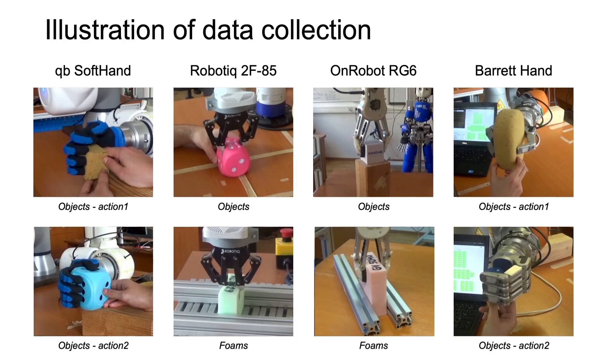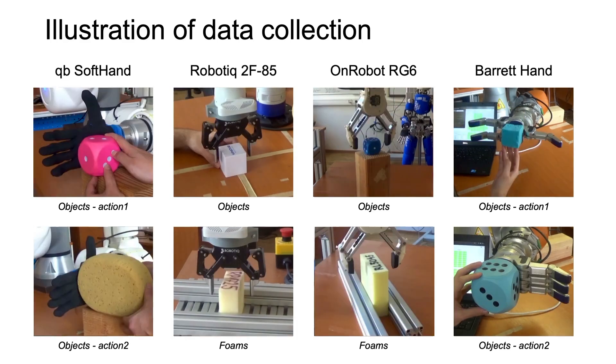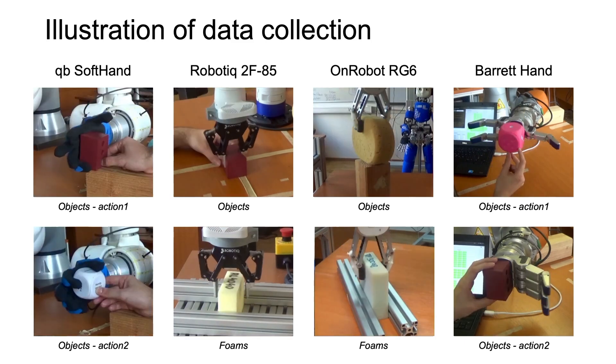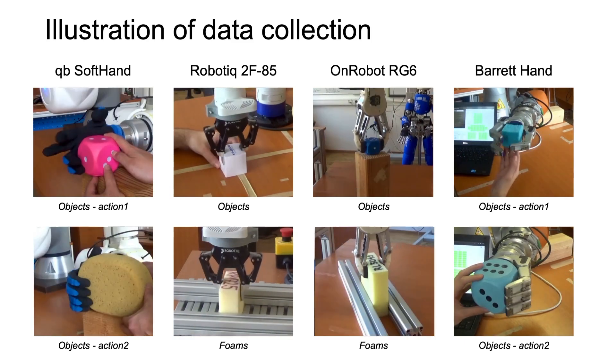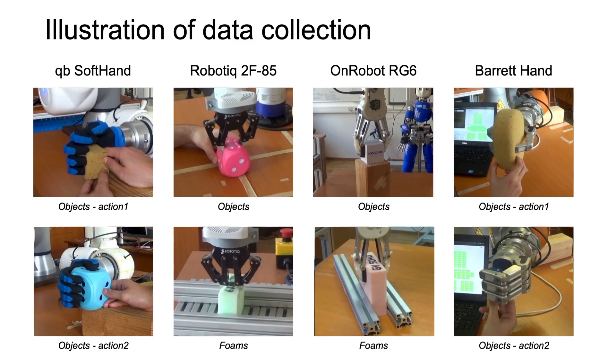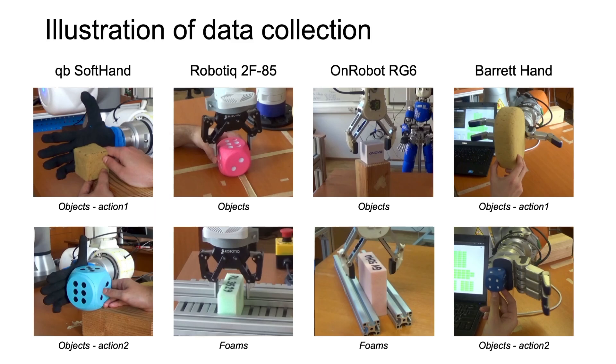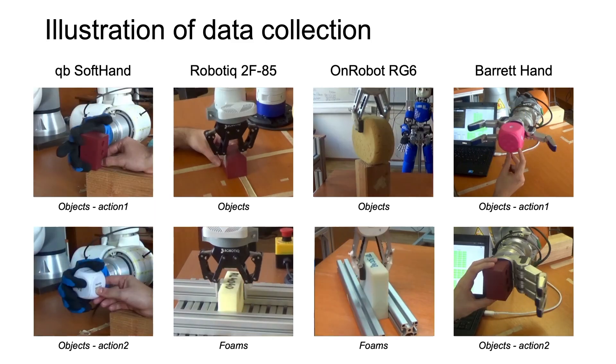we employed two anthropomorphic hands and two two-finger grippers to perform grasps in different gripper configurations on two sets of deformable objects, one of which is nearly indistinguishable by human touch. In total, we collected over 24,000 measurements. The resulting dataset is publicly available.